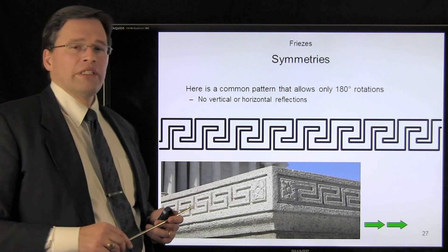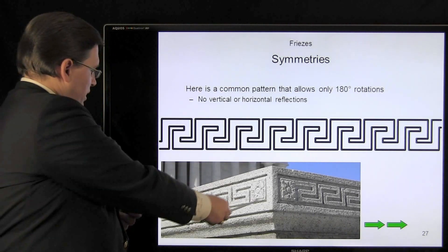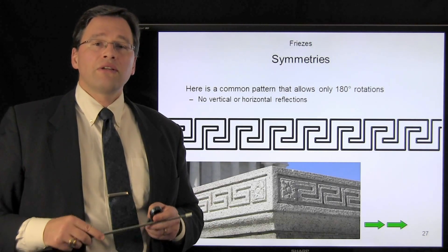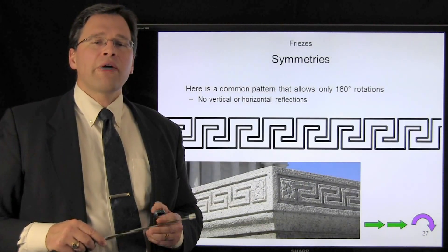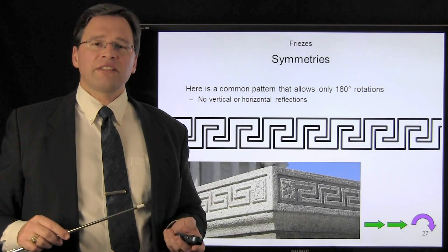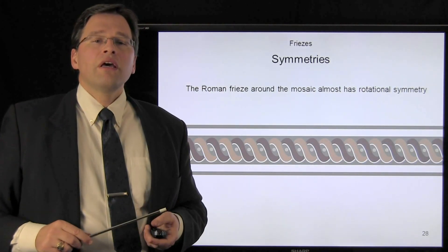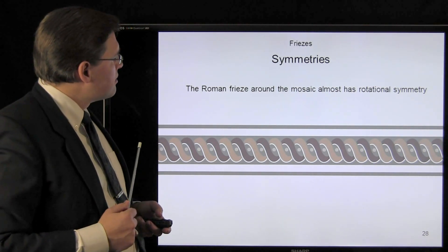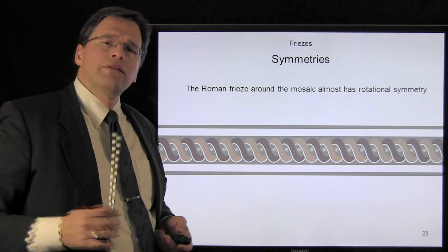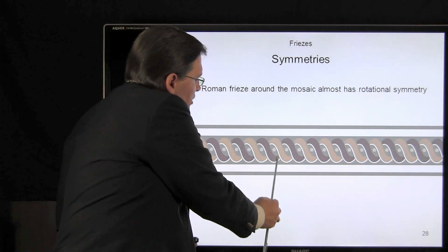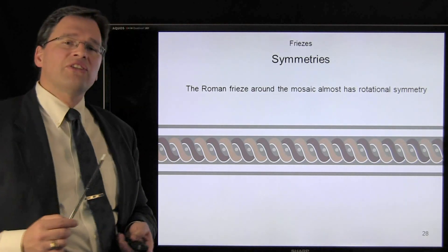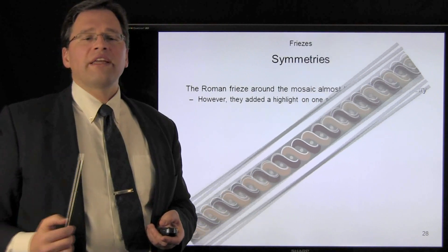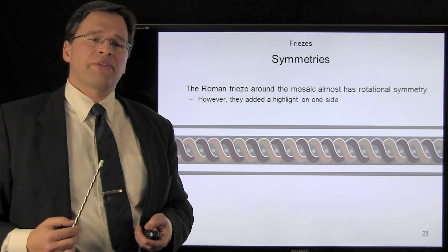Here's a very common frieze, for example out in front of the Lincoln Memorial. We have translational symmetry but we also have rotational symmetry; however, there are no reflections. The Roman mosaic frieze almost has rotational symmetry, however the artisan decided to highlight one of the edges of each of the patterns. That highlight breaks the symmetry, so if we rotate it 180 degrees, the highlight appears at the top of the frieze.